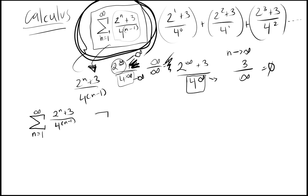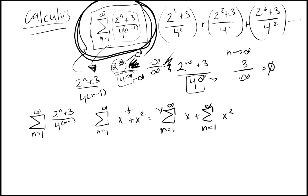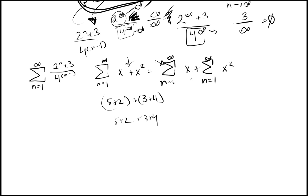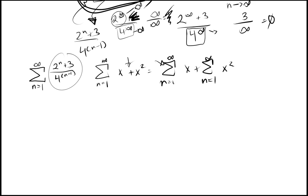Properties of sums means that the sum of something like x plus x squared is the same as the sum of x plus the sum of x squared — because you're just adding, and addition can be split up. It's like 5 plus 2 plus 3 plus 4 is the same rearranged. So using algebra, you can take the expression and turn it into 2 to the n over 4 to the n minus 1, plus 3 over 4 to the n minus 1.